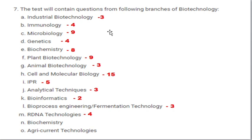Many questions have been asked from repeated topics that also appear in the DBT Biotechnology Eligibility Test. Overall, 80% of the questions are from repeated or highly important topics studied at BSc and MSc level, so the question paper was set at BSc level — not advanced level. The remaining 20% of questions were difficult, and general aptitude and GK questions were also asked at NCERT level.